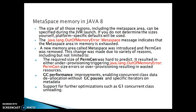A new memory area called MetaSpace was introduced and PermGen was removed. This change was made due to a variety of reasons. The required size of PermGen was hard to predict — it resulted in either under-provisioning, triggering java.lang.OutOfMemoryError PermGen size errors, or over-provisioning, resulting in wasted resources.